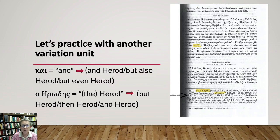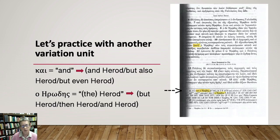If I was asking you to write a paper on this, I would ask you to make a choice. You can argue for Kai or you can argue against Kai, and I would just want to see that you give me good reasons. But notice also that this is not a very important variation unit.